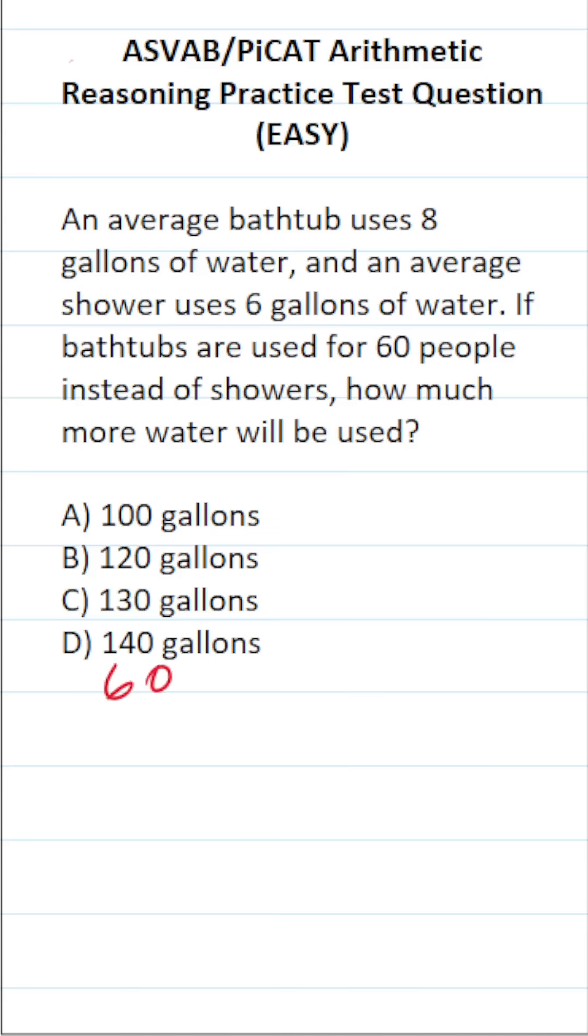Let's say those 60 people took baths. They each used 8 gallons of water, so that's going to be 60 times 8. 0 times 8 is 0, 6 times 8 is 48.